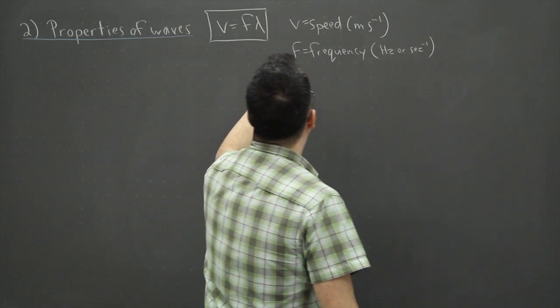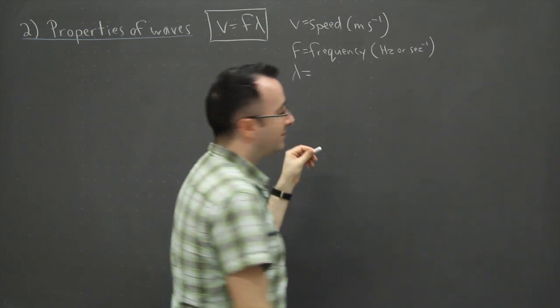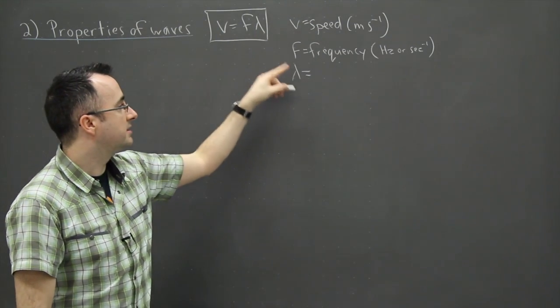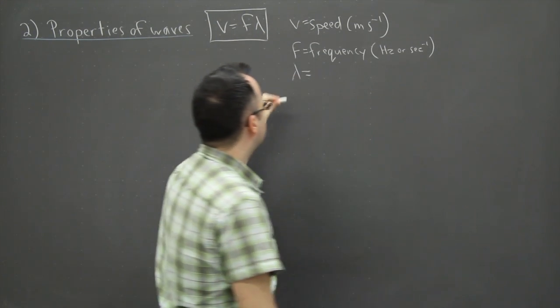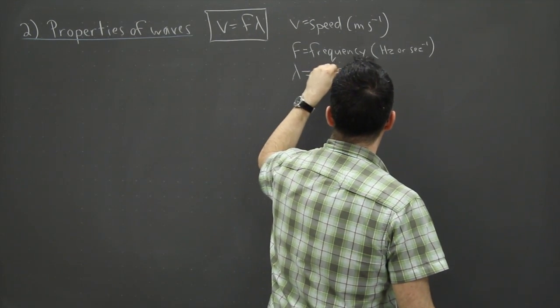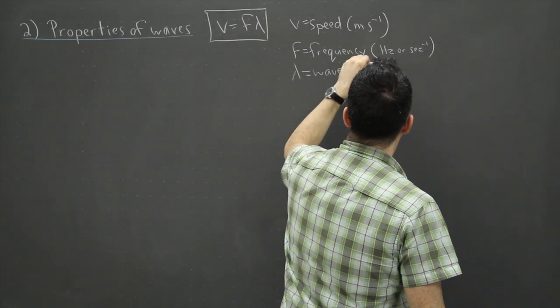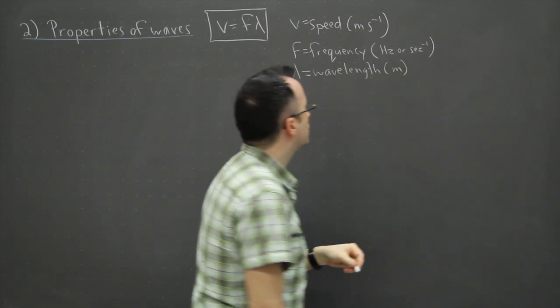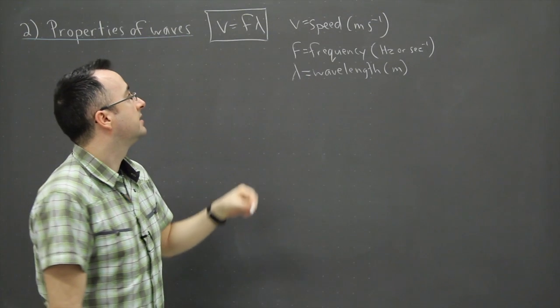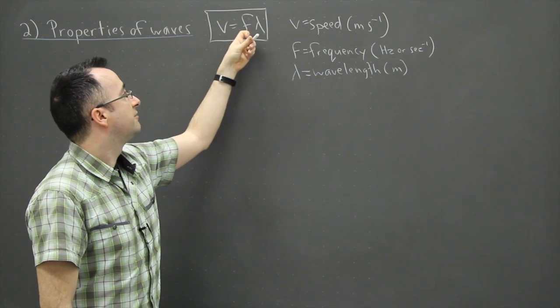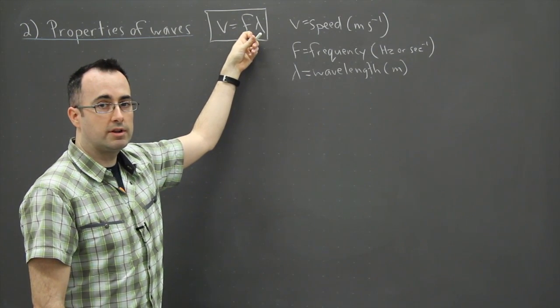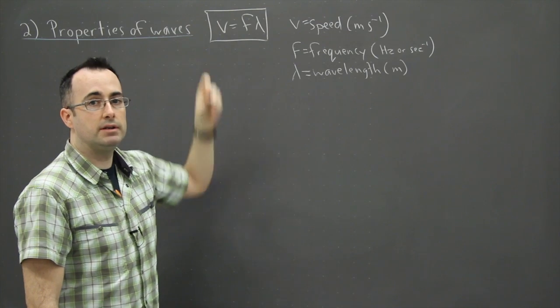We also have lambda, which is this little Greek symbol right here, and that is the wavelength measured in meters. So this tells you how to convert from frequency to wavelength if you know the speed.